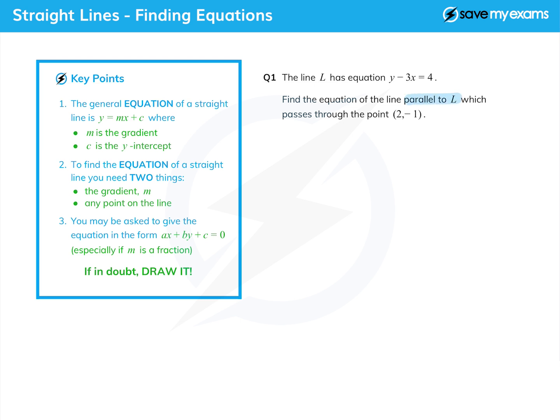Remember that parallel means has the same gradient. We're also given a point which our new line passes through. So thinking about the things we need to find, we know a point on the line, so we just need to find the gradient m, and the gradient m will be the same as the gradient of the line l.